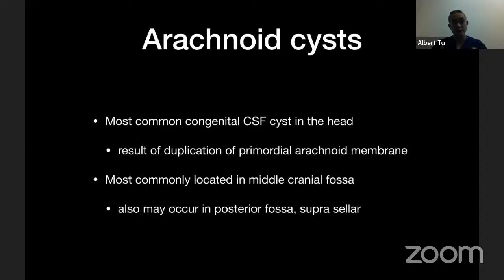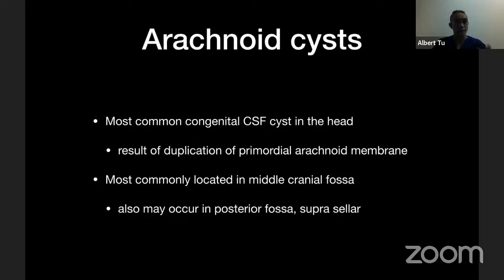Looking at arachnoid cysts specifically — basically any pocket of CSF surrounded by arachnoid, sometimes just loculations — these are the most common congenital CSF cysts in the head. They result from a duplication of the arachnoid membrane, usually before birth during fetal development. The most common location is in the middle cranial fossa, but they can occur really anywhere — commonly in the posterior fossa, sometimes suprasellar, but most commonly in the middle cranial fossa.